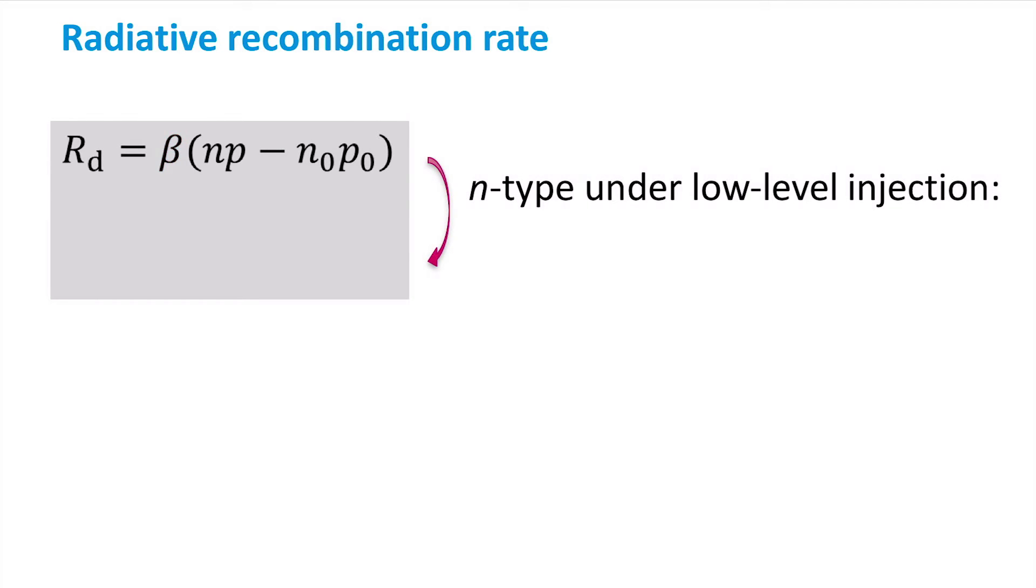For example, let's look at an N-type semiconductor under low-level injection. Here, the change in free electron concentration, ΔN, is negligible compared to the total electron concentration, N.